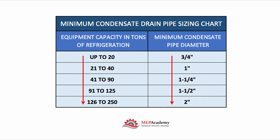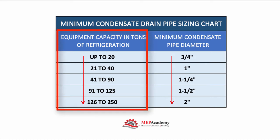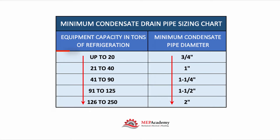Condensate drain pipe sizing is dictated by the local code. Enclosed you will find the requirements for many local codes, but be sure to check your local code for the requirements. If the outlet size of the equipment condensate drain is larger than what is shown in this chart, then you'll be required to use the larger outlet size. The chart is indicated by the tons of refrigeration — the air conditioning tons — so up to 20 tons you can use a three-quarter inch, 21 to 40 tons a one inch, and so on.